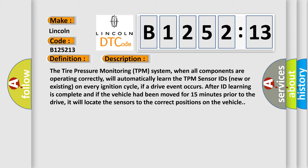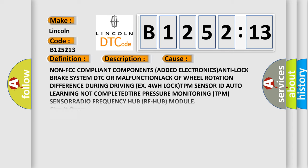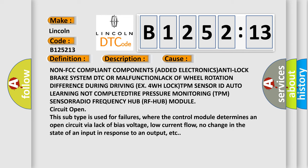The Tire Pressure Monitoring TPM system, when all components are operating correctly, will automatically learn the TPM sensor IDs, new or existing, on every ignition cycle. If a drive event occurs after ID learning is complete and if the vehicle had been moved for 15 minutes prior to the drive, it will locate the sensors to the correct positions on the vehicle. This diagnostic error occurs most often in these cases: